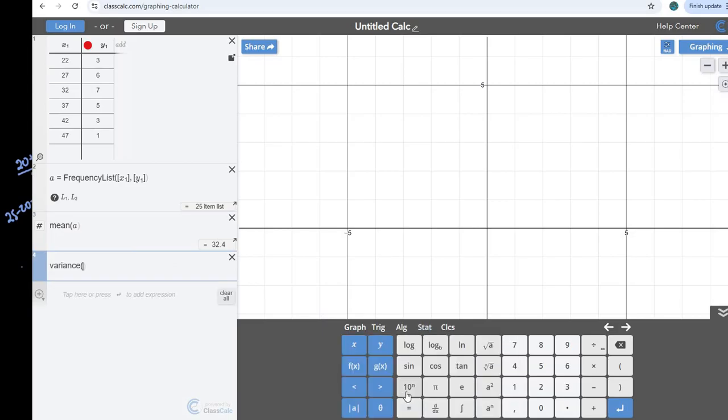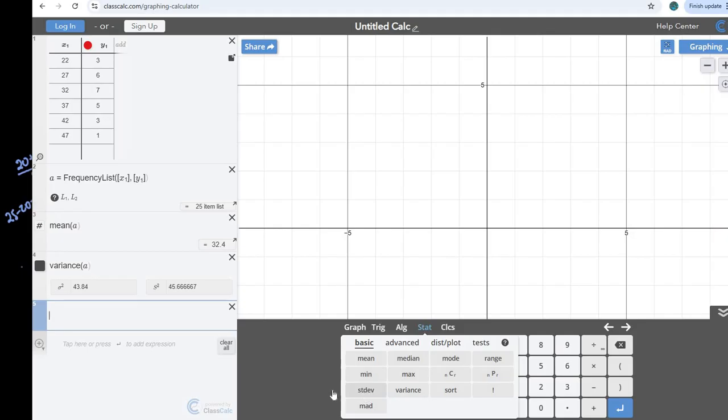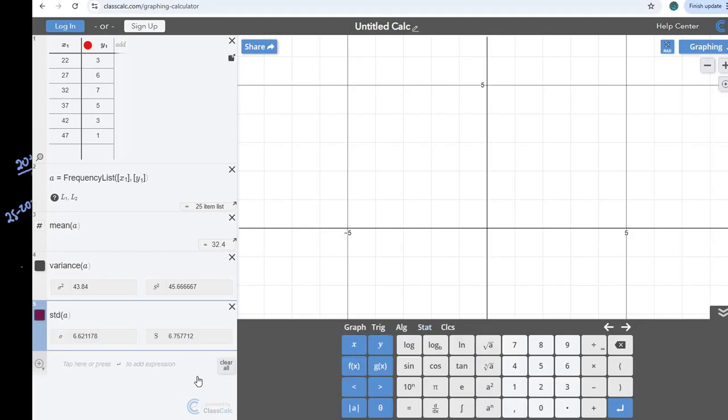If I go to stat, and variance, then I can just type in the variance of A, and then my last one, I would go to stat, and the standard deviation. And I didn't look at this, so if you notice under variance, it gives us both answers.